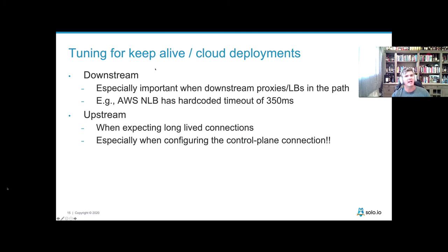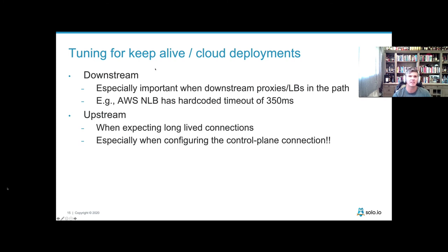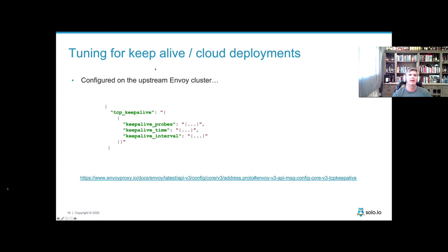One of the last topics is tuning for cloud deployments, especially in a public cloud. One of the most common issues we've encountered over the last several years is how load balancers behave in a public cloud. If you run Envoy proxy on a VM connecting to an Amazon load balancer, you could see very unpredictable results. Being able to tune things like Keep-Alive and Session and Stream Keep-Alive is very important. Here's a snippet for configuring that for an upstream cluster — whether you're connecting to a control plane for configuration updates or to an NXDS service for authentication or authorization policies when a request comes in.